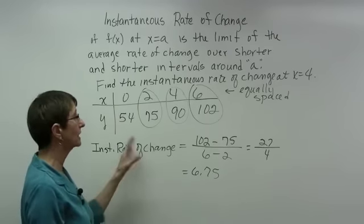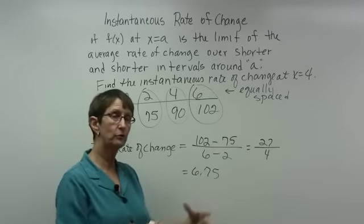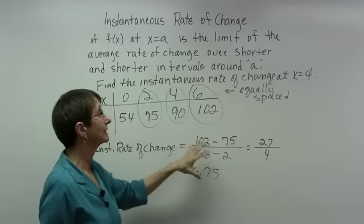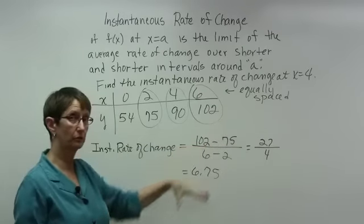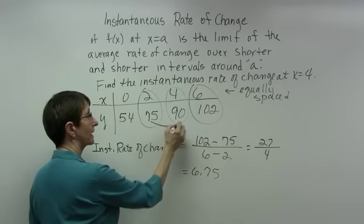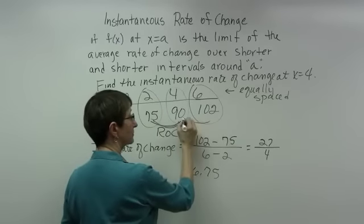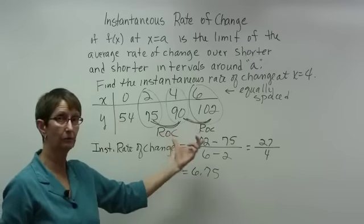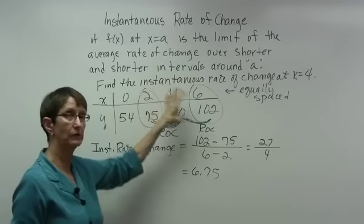Instantaneous rate of change is not a terribly new concept — it just follows from average rate of change. Now, if your x's are not equally spaced, you have to go through a different process: find the rate of change to the left of 4 and the rate of change to the right of 4, then average the two together by adding them and dividing by 2.